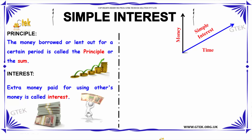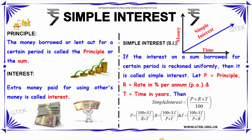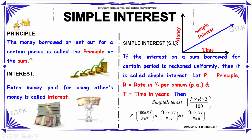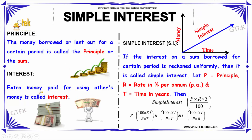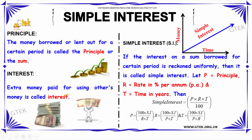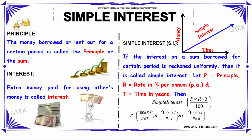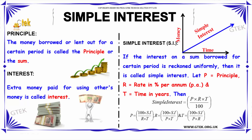A few definitions in simple interest: The principal is the money borrowed or lent out for a certain period. The interest is the extra money paid for using another's money. Simple interest is when the interest on a sum borrowed for a certain period is reckoned uniformly.